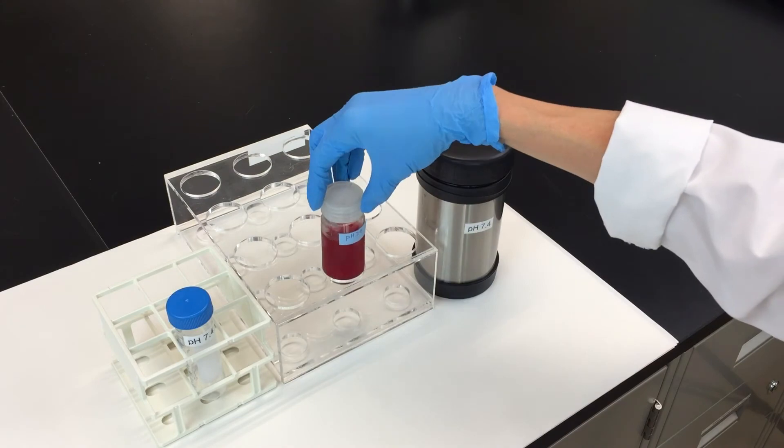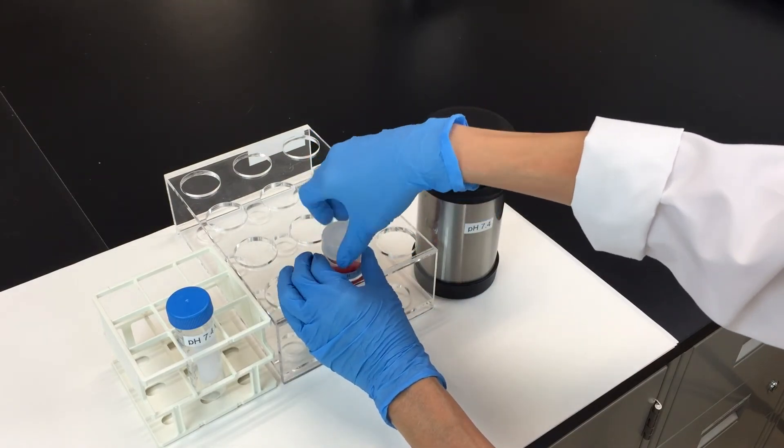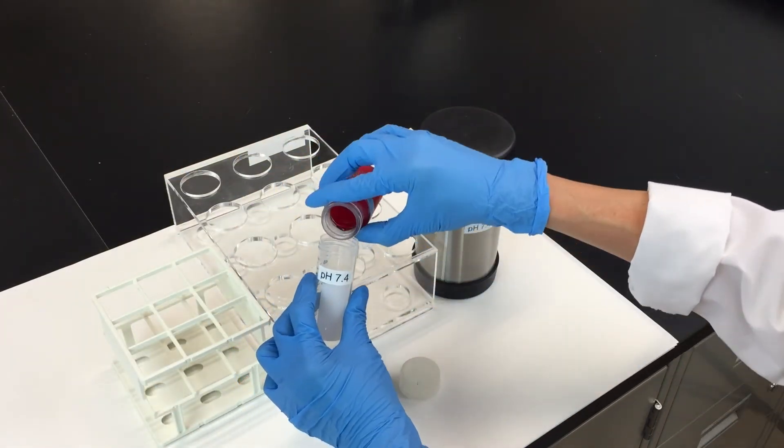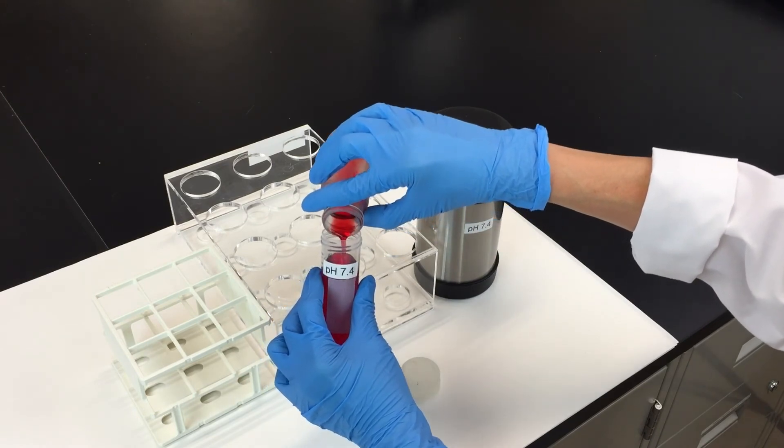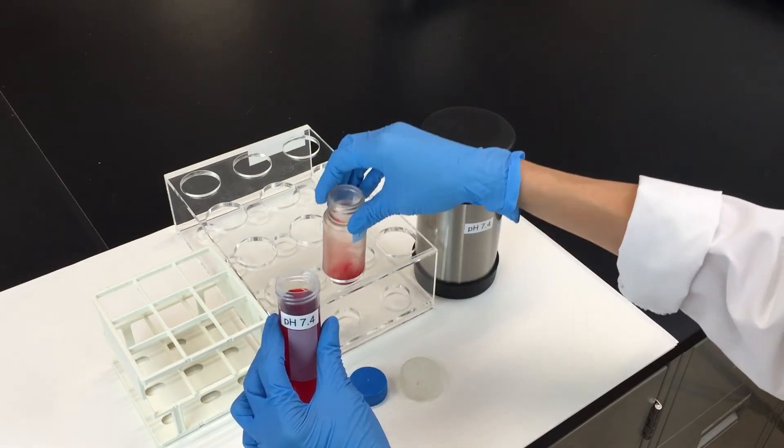After the spin, pour the liquid into a tube labeled pH 7.4 and discard the pellet. Put the tube on ice and your hemolysate is now ready to use.